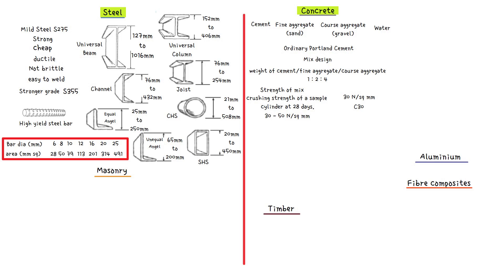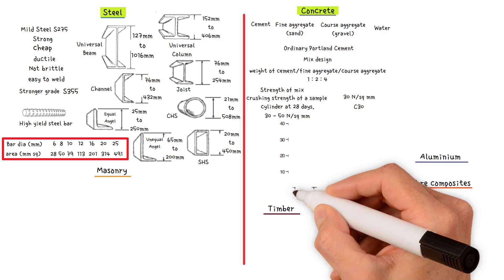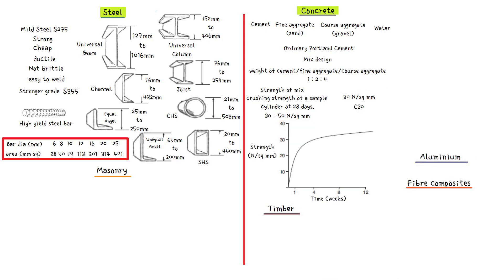When water is added to cement, a chemical reaction called hydration takes place. The setting process should not be thought of as drying out, and in fact concrete can be placed quite successfully below water. Normal concrete starts to set approximately 45 minutes after the water is added, and it should not be disturbed once this initial set has begun. The concrete should then be protected against evaporation and excesses of temperature until the final set is complete, which should take 3 to 6 days. This is known as curing. The concrete hardens for many years, though the rate of increase slows dramatically after 14 days. The seven-day strength is approximately two-thirds of the 28-day strength.